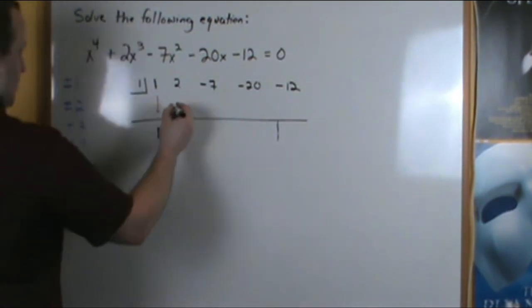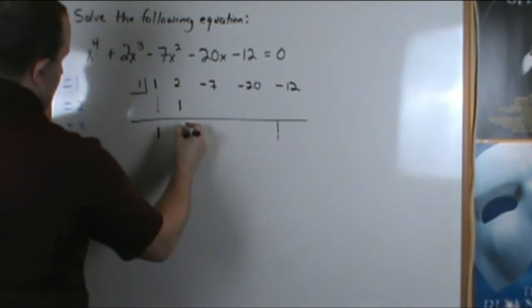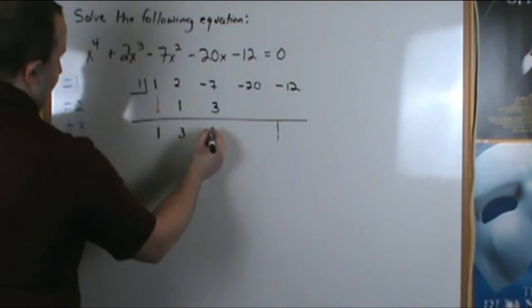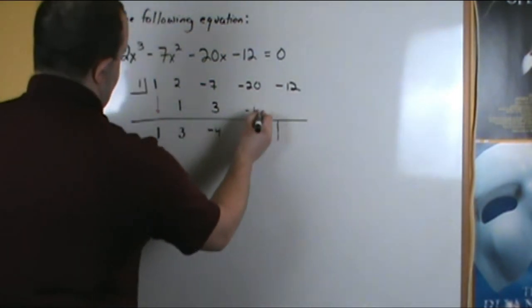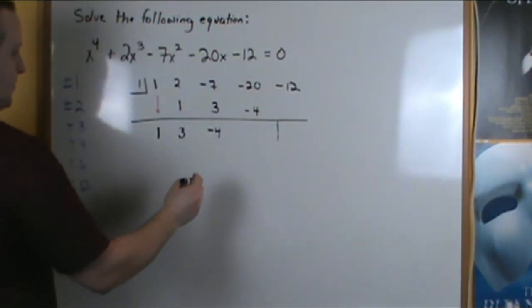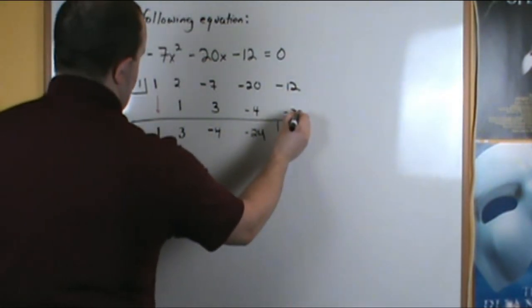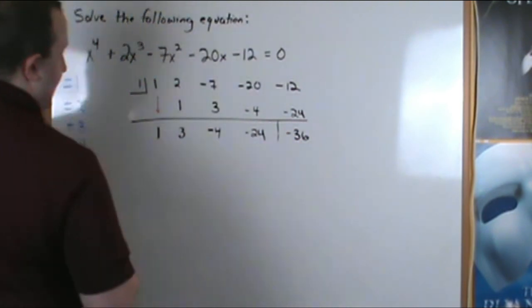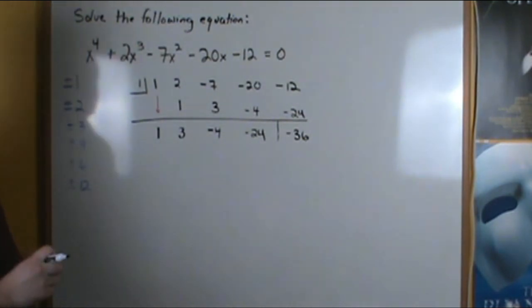1 times 1 is 1. Bring it underneath the 2. 2 plus 1 is 3. 1 times 3 is 3. Negative 7 plus 3 is negative 4. 1 times negative 4 is negative 4. Negative 20 plus negative 4 is negative 24. 1 times negative 24 is negative 24. And our remainder here is not 0. It's negative 36. So that means x equals 1 is not a solution.